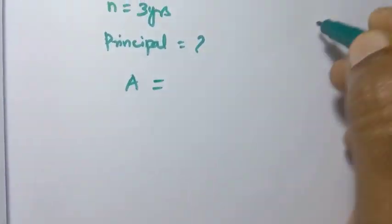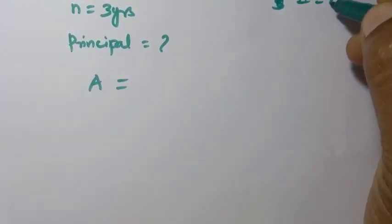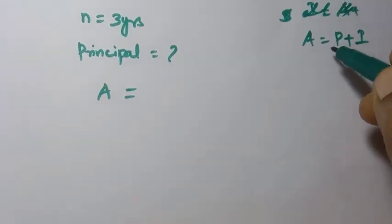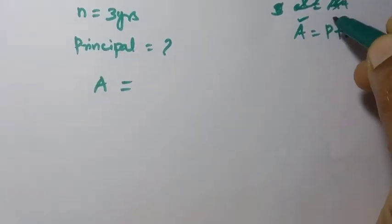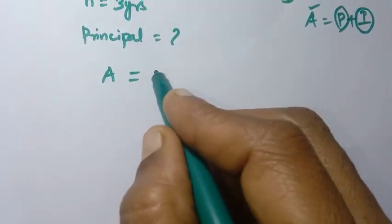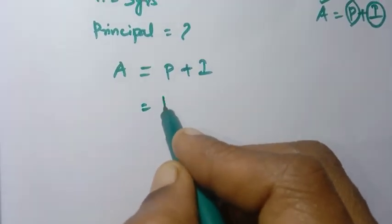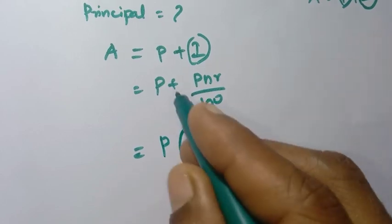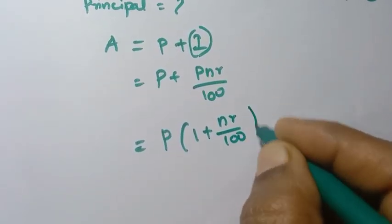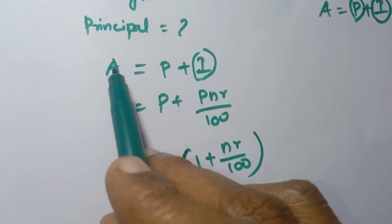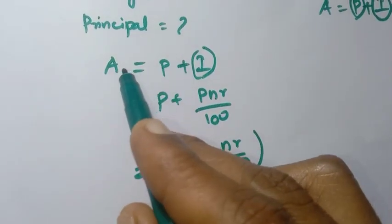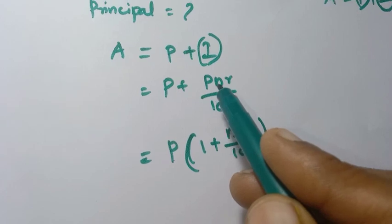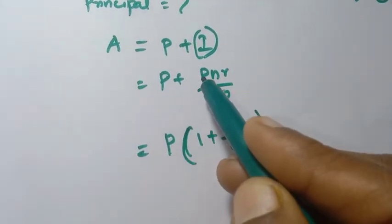Using the formula: A = P plus I, and SI = PNR by 100. So A = P into 1 plus NR by 100. Substituting: 17,000 = P into 1 plus 3 into 12 by 100. That gives 17,000 = P into 1 plus 36 by 100, which simplifies to P into 1 plus 9 by 25.